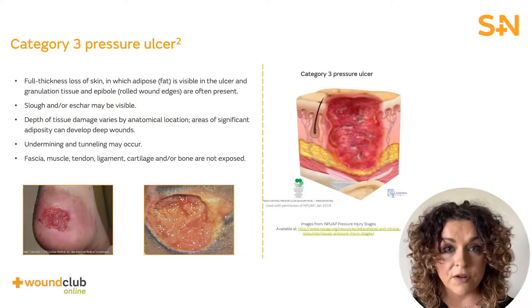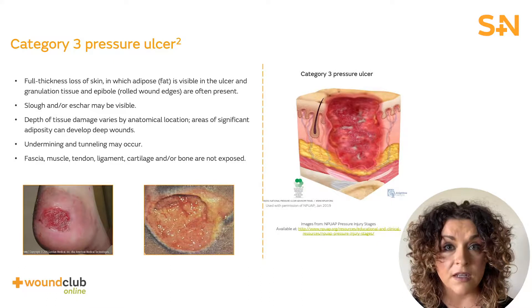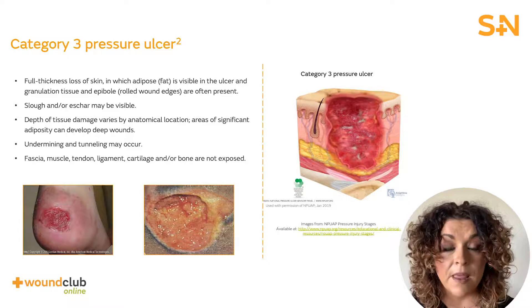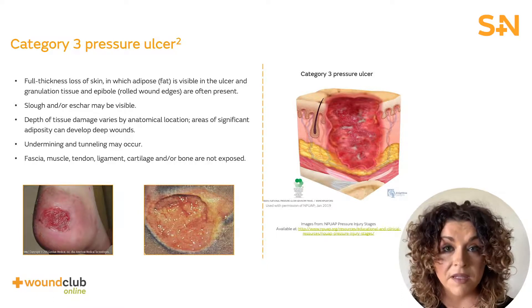Category 3 pressure ulcers are defined as those with full thickness loss of skin. Adipose or fatty tissue is visible, often with the presence of granulation, slough and or eschar in the wound bed. There may be the presence of undermining or tunneling. However, muscle, tendon or bone is not exposed.